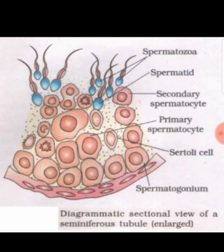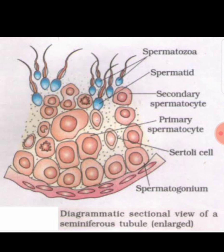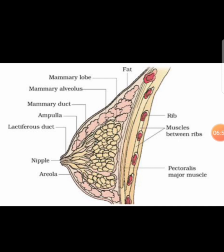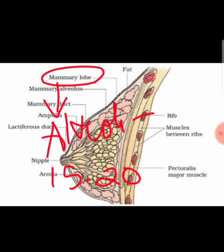This is the structure of the mammary gland. There are around 15 to 20 mammary lobes. In each mammary lobe you can find clusters of cells called alveoli. These alveoli secrete milk.